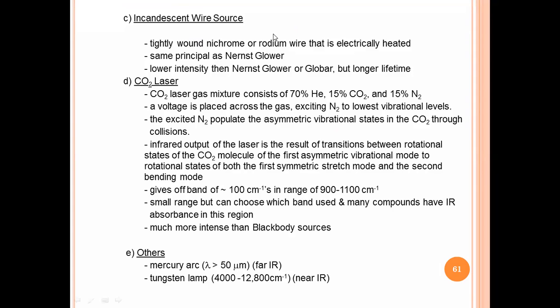Another lamp radiation source used is an incandescent wire source - tightly bound nichrome or rhodium wire that is electrically heated. Same principle as Nernst Glower. Only difference is in the material used as a source. Same principle but lower intensity than the previous two radiation sources.